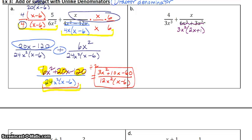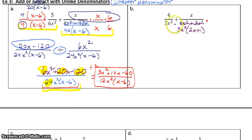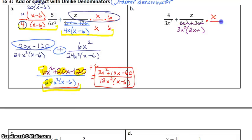Now ask yourself the question: what does this one need so that it includes everything included on the left? Notice the left includes a 3 and an x cubed. This one already has a 3 — check, I don't need to put a 3 there. But this one only has x squared and this one has x cubed, so I need an x to make it match.